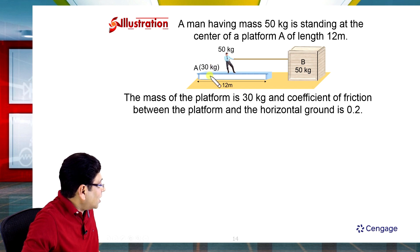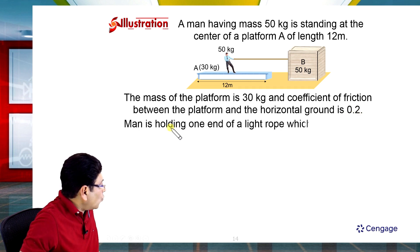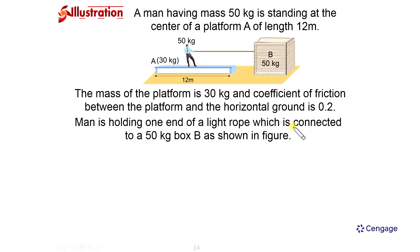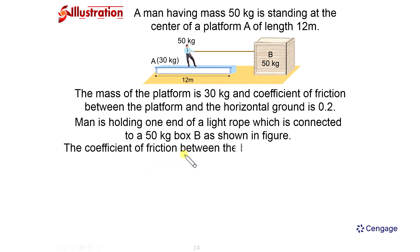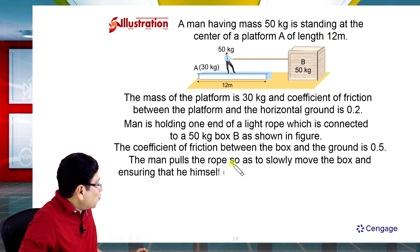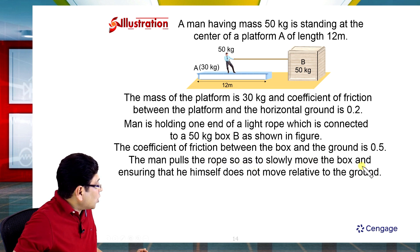The platform mass is 30 kg and the coefficient of friction between the platform and ground is 0.2. The man is holding one end of a light rope which is connected to a 50 kg box B, as shown in the figure. The coefficient of friction between the box and ground is 0.5. The man pulls the rope so as to slowly move the box, ensuring he himself does not move relative to the ground.